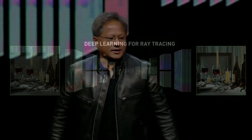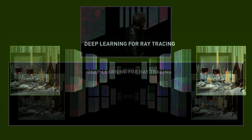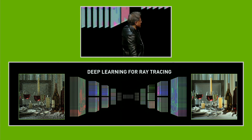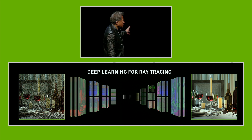Let me give you an example of something that we've been working on. In our company, we do a fair amount of deep learning research. Let me give you an example of what's actually happening here. Basically, this network in the middle — this is just an articulation of the network — it's called an autoencoder.